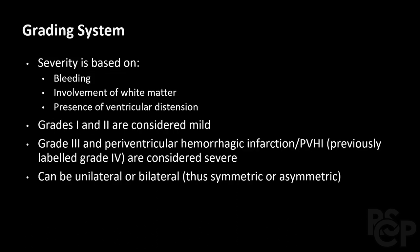The grading system is based on bleeding, involvement of white matter, and presence of ventricular distension. Grades 1 and 2 are considered mild, while grade 3 and what was previously known as grade 4 — now called periventricular hemorrhagic infarction (PVHI) — are both considered severe. Grades can be unilateral or bilateral, otherwise known as asymmetric or symmetric.